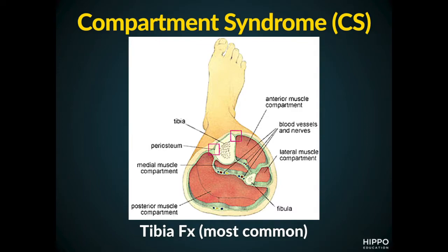So what do we get as a consequence? Ischemic necrosis. Compartment syndrome is when the pressure in those muscle compartments gets too large, and it squishes the muscle, damages it, potentially kills it, and also squishes on the nerves and associated blood vessels.